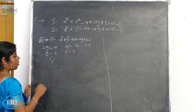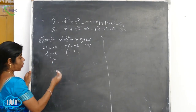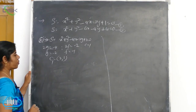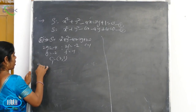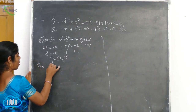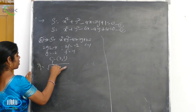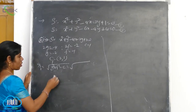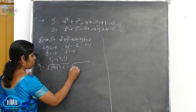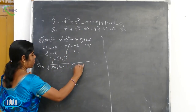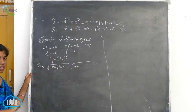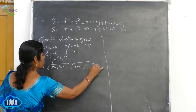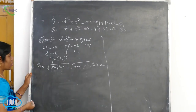The center of circle 1 is at (-g, -f), which is (2, 1). Then R1 is the square root of g squared plus f squared minus c. G squared is 4, f squared is 1, minus c which is minus 1, giving root of 4, so R1 is 2 units.